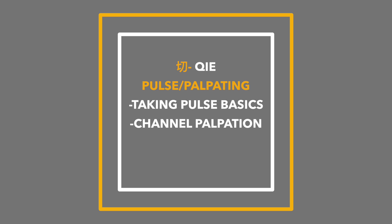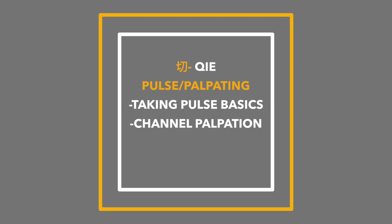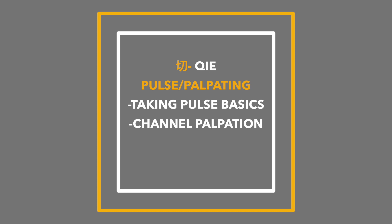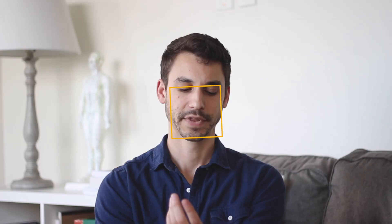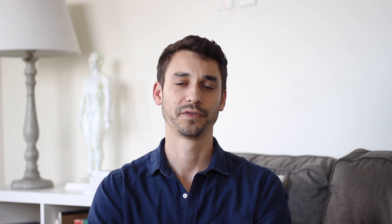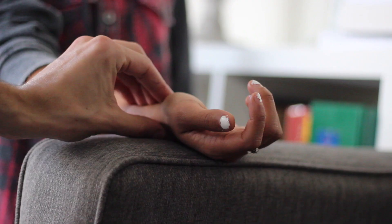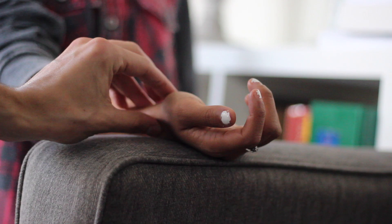The last skill, qie, is palpation. The most famous form of qie is pulse diagnosis and channel palpation. In pulse diagnosis, the physician is feeling three areas of the radial artery — not only the strength, depth, and width of the pulse, but also each individual position. The first position is known as the cun, the second is the guan, and the third is the chu. These each correlate to certain organs in the person's body.